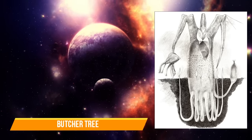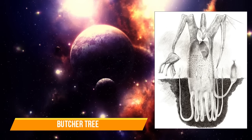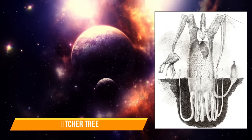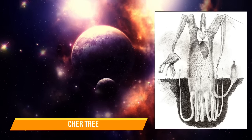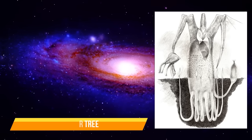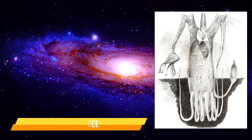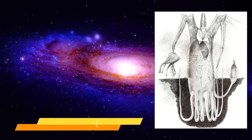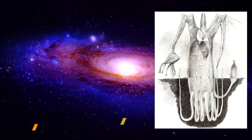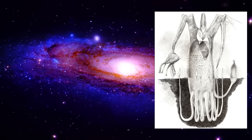The species' reproductive processes are unknown. One possibility is that the small flyer it associates with transfers eggs and sperm between individuals, in a similar manner to how a bee would pollinate flowers. Another possibility is that the flyer itself is the second gender of the species, an extreme form of sexual dimorphism. Either way, young butcher trees are found close to their parent, connected to them through an umbilical cord, which disappears once the young are capable of nourishing themselves.